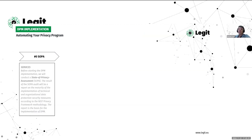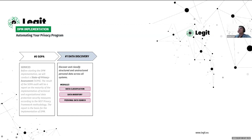After completing the State of Privacy Assessment, the real magic begins — implementing the different modules of Data Privacy Manager to transform and automate your privacy program. DPM is designed as a modular solution, allowing you to select the modules most relevant to your needs first and expand in any order you prefer. The first recommended phase of actually implementing the software is data discovery.